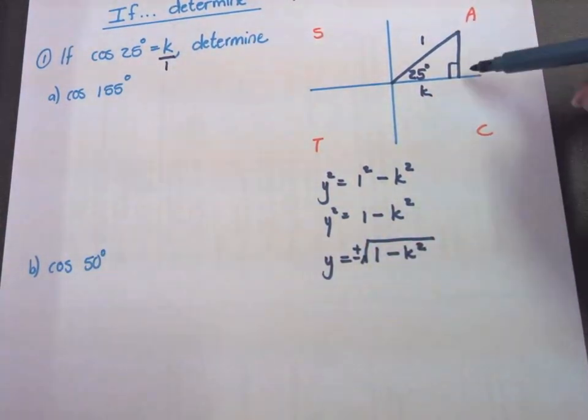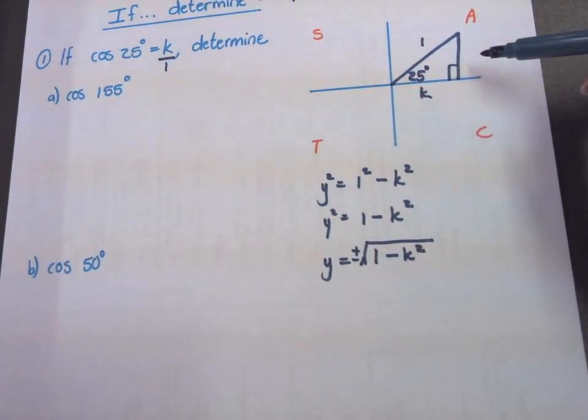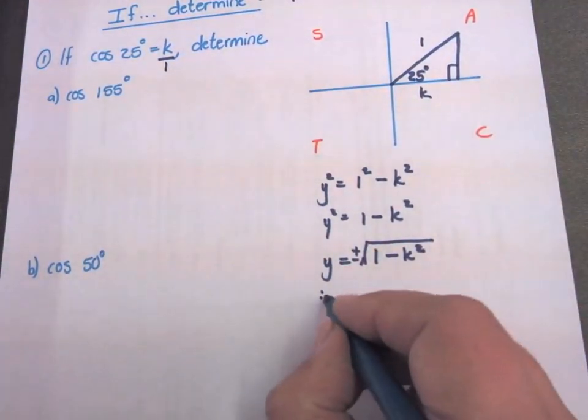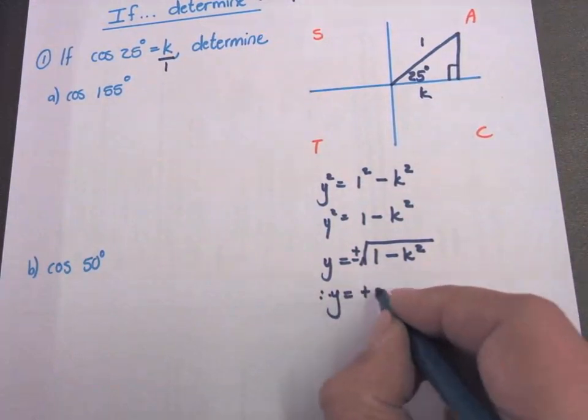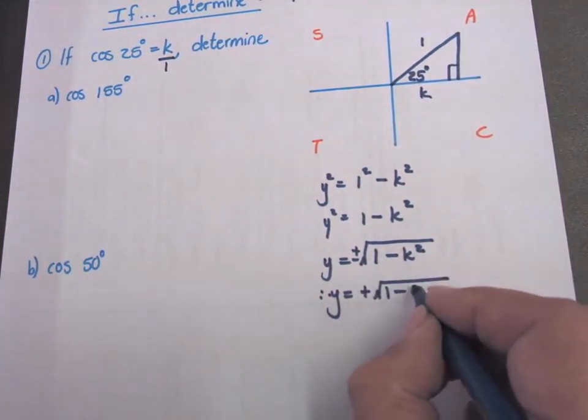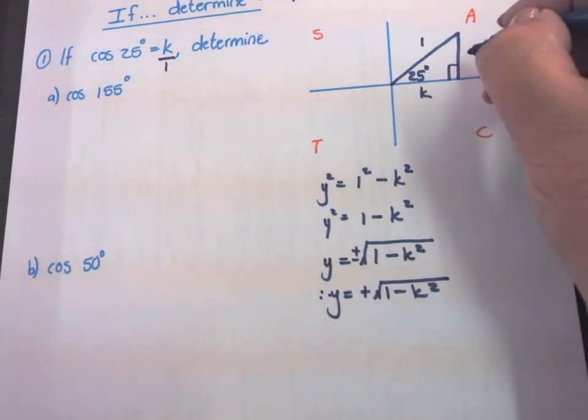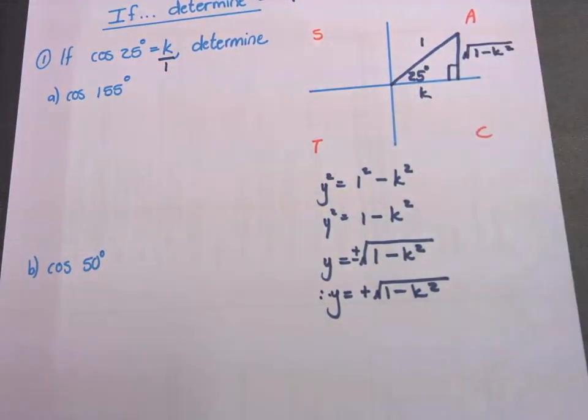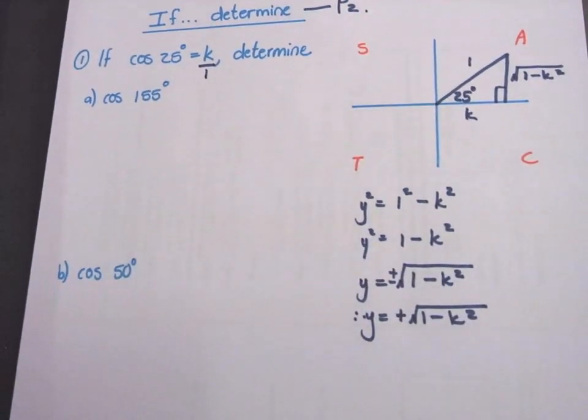Square root of 1 minus K squared. And that is my length. Is Y on the Cartesian plane a positive or a negative length? Positive. Therefore, Y will be the positive square root, square root of 1 minus K squared. Now we can do our sum.